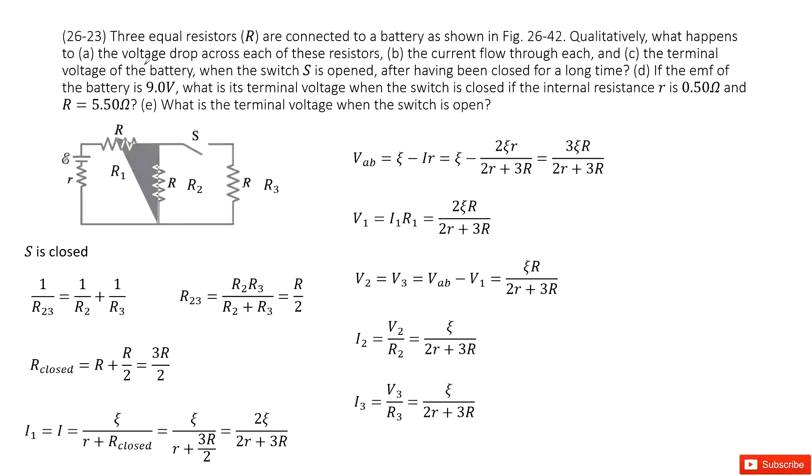So we look at these circuits, we can see we have three resistors R1, R2, R3, with the power source, battery epsilon, and internal resistance R. Initially, this S is closed.